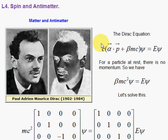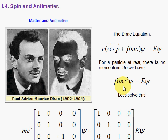This Dirac equation, which we derived in the earlier section, is the free particle Dirac equation. It does not involve any potential energy, so it's a simplified form of the more general Dirac equation. We're going to make it even simpler by having the particle be at rest. So the momentum is zero, and we have this nice relationship. Notice that this shows us that E equals MC squared — the rest mass is M and the energy for a particle at rest, according to relativity, is MC squared.